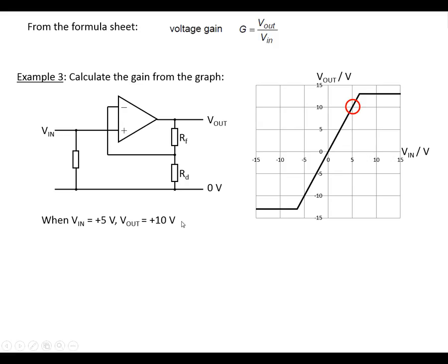So using the formula here, V out over V in for gain, put in the numbers: 10 divided by 5 will give us a gain of 2. So this is a graph, it shows a gain of 2. What we've got here is saturation where the output saturates at plus and minus 13 volts.